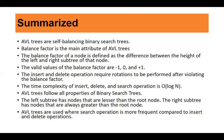To summarize: AVL trees are self-balancing binary search trees. The balance factor is the main attribute, defined as the difference between the height of the left and right subtrees of a node. The valid values are minus one, zero, and plus one. Insert and delete operations require rotations whenever the balance factor is violated. The time complexity of insert, delete, and search operations is O(log n), which was not guaranteed in a simple binary search tree. AVL trees follow all properties of binary search trees — the left subtree has nodes lesser than the root and the right subtree has nodes greater than the root.